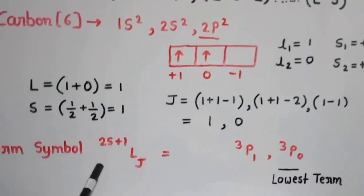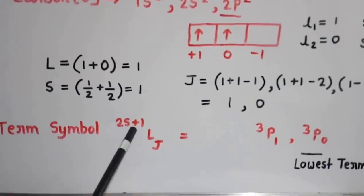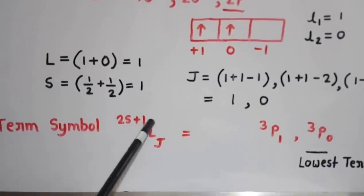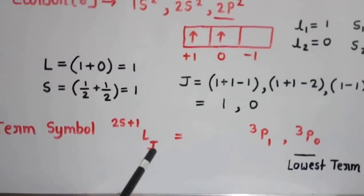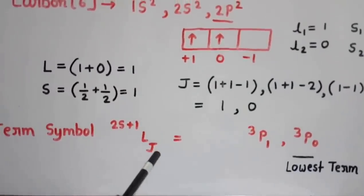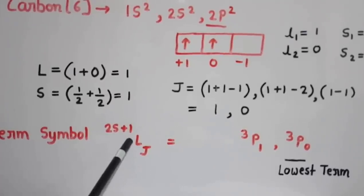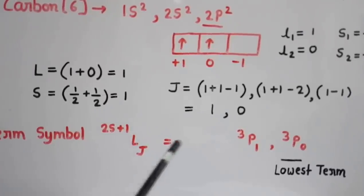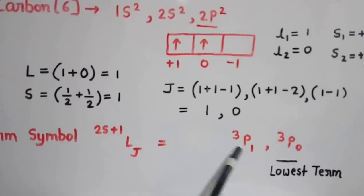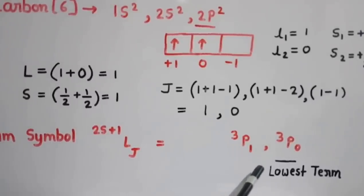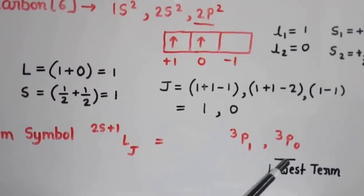So L = 1 and S = 1. For J, we get values 1 and 0. The multiplicity is 2S+1 = 3, L = 1 corresponds to P, and J values are 1 and 0. So we get two states: ³P₁ and ³P₀, out of which the lowest state is ³P₀.